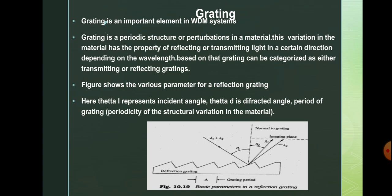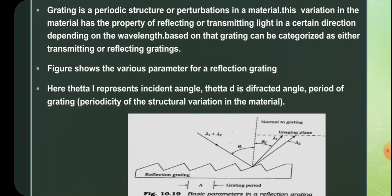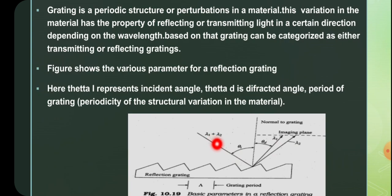The figure here shows the reflection grating. You can see that the structure has got perturbations. The light coming to this structure will hit one of these perturbations and as a result, it will be refracted. In the incident light, there are two wavelength components, lambda 1 and lambda 2. When hitting this region, due to the change in the refractive index, the light will be refracted into two individual components.